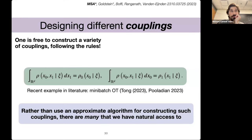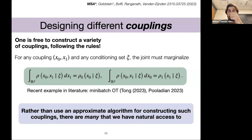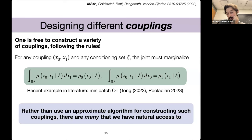For a joint density of X0 and X1, given any additional conditioning set Xi, all we need is that this joint density properly marginalizes: integrating over X1 gives rho_0(X0) given the conditioning set, and integrating over X0 gives rho_1(X1) given the conditioning set. Rather than using an approximate algorithm for constructing such couplings, we ask: what are some interesting ones we have natural access to?